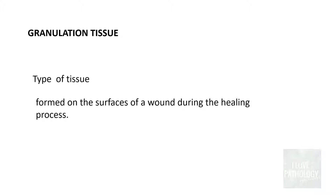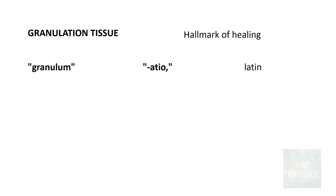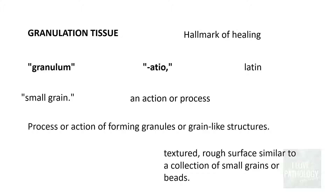What is granulation tissue? Granulation tissue is a type of tissue which is formed on the surfaces of a wound during the healing process. It is the hallmark of the healing process. The word granulation tissue is derived from Latin — granulum meaning small grain and actio meaning an action or process — basically the process of forming granule or grain-like structures, which appear as a textured rough surface similar to a collection of small grains or beads, which is what you see on the surfaces of the wound.